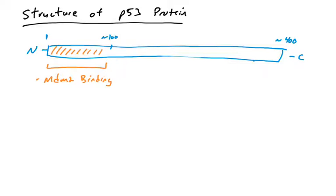MDM2 binds these amino acids of p53. As discussed in previous videos, regulation of the interaction between p53 and MDM2 occurs at serines in the first 30 amino acids of p53 — serines 6, 9, 15, and 20. When those serines are phosphorylated, MDM2 can't bind p53. So there's a lot of regulation via phosphorylation that controls the MDM2-p53 interaction.